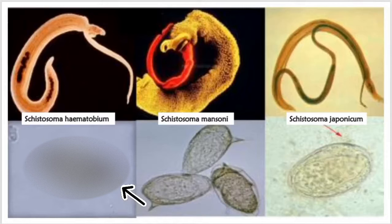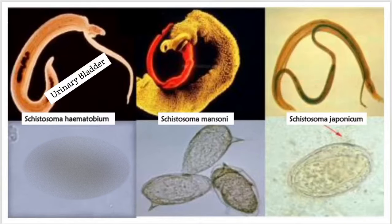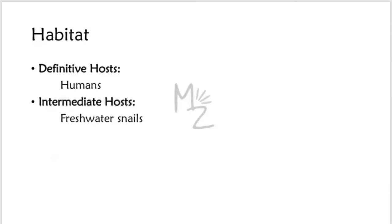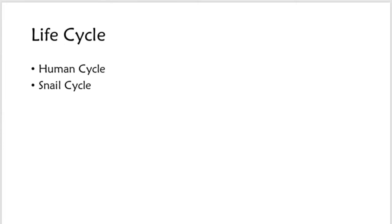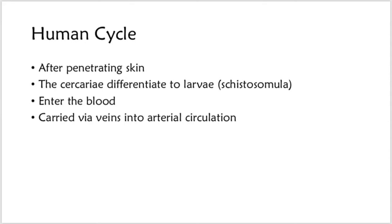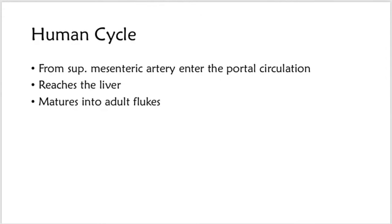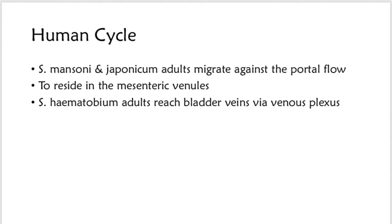S. mansoni and S. japonicum adults live in the mesenteric veins, whereas S. haematobium lives in the veins draining the urinary bladder — hence schistosomes are known as blood flukes. The definitive hosts are human beings and the intermediate hosts are freshwater snails. Transmission occurs by a fecal-dermal or urinary-dermal route; humans are infected when free-swimming fork-tailed cercariae penetrate the skin. After penetrating the skin, cercariae differentiate into larvae called schistosomula, enter the blood, and are carried via the veins into the arterial circulation. Those entering the superior mesenteric artery pass into the portal circulation and reach the liver, where they mature into adult flukes.